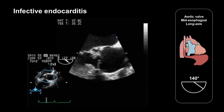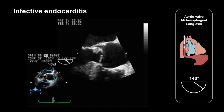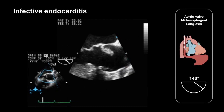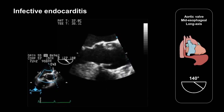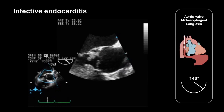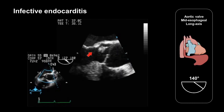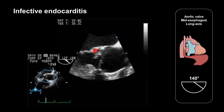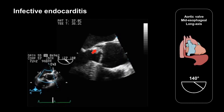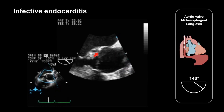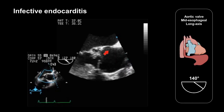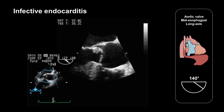Here we have a patient with infective endocarditis. They have an irregular mobile oscillating vegetation on the ventricular aspect of the non-coronary cusp.